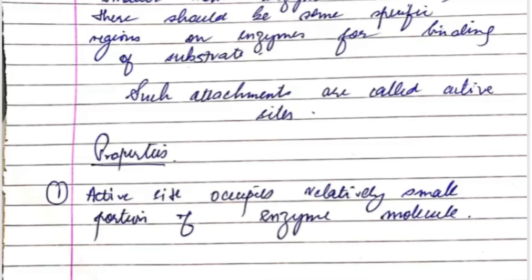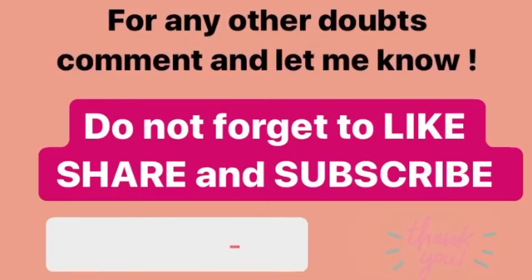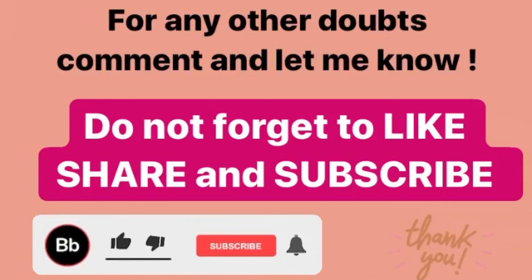In this video, we studied the properties of enzymes and types of enzyme-related terms like apoenzymes, coenzymes, cofactors, holoenzymes, active sites, prosthetic groups, and holoenzymes. I hope this video is useful for you. If you liked the video, please hit the like, share, and subscribe button. Thank you.